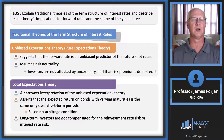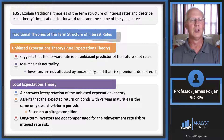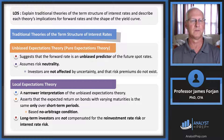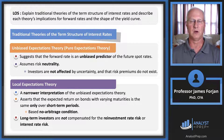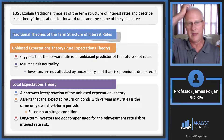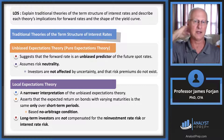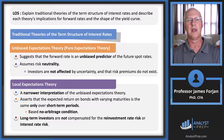We start with the unbiased expectations theory, also known as the pure expectations theory. It suggests that the forward rate is an unbiased predictor of future spot rates. However — and you should pause here — this is an unbiased predictor only under a key assumption: risk neutrality. That means bondholders are neutral regarding risk, unaffected by uncertainty, and do not attach risk premiums. Under those conditions, the forward rate is an unbiased predictor of future spot rates.